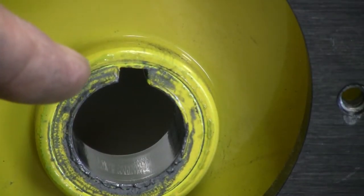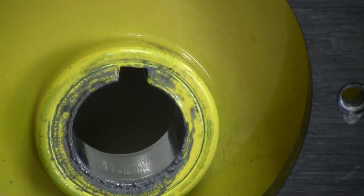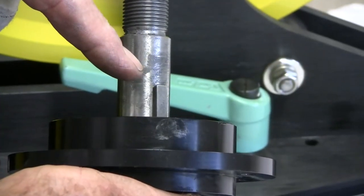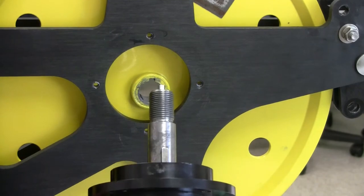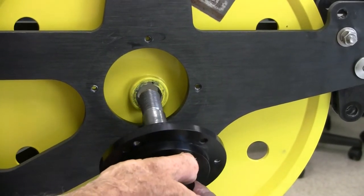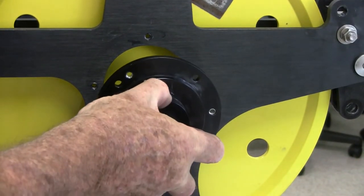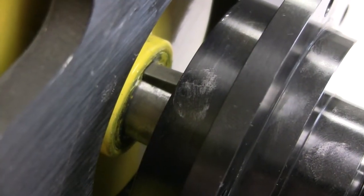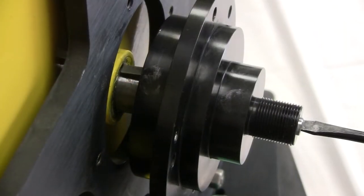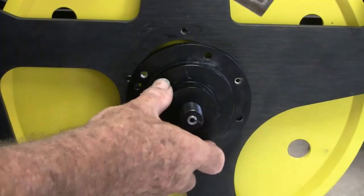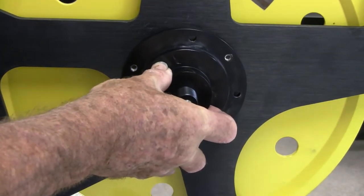Note the keyway in the wheel hub and the key on the shaft. When reinstalling the shaft, rotate it so that the key goes in the keyway. Now place the hub in the frame.